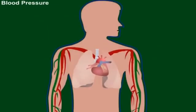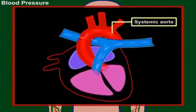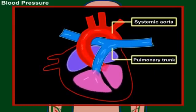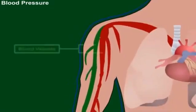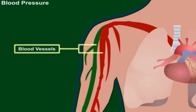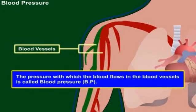When the heart pumps blood into the systemic aorta or into the pulmonary trunk, the blood flows with pressure in the blood vessels. The pressure with which the blood flows in the blood vessels is called blood pressure (BP).